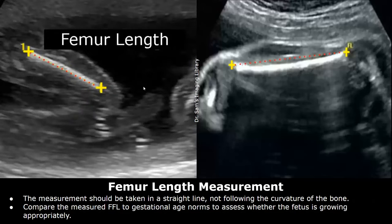Take the measurement in a straight line if you see a curved femur. There is no need to include the curve in the measurement or place any caliper following the curve. You just need to place calipers at both ends of the femur.